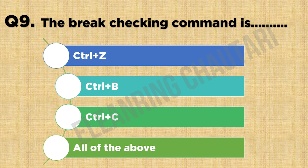Question 9: The break checking command is — Option A: Ctrl+Z. Option B: Ctrl+B. Option C: Ctrl+C. Option D: All of the above. The correct answer is Option C: Ctrl+C.